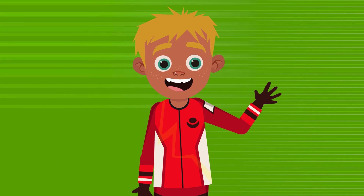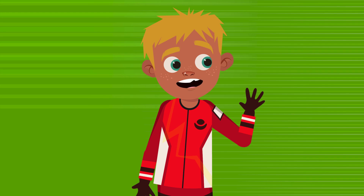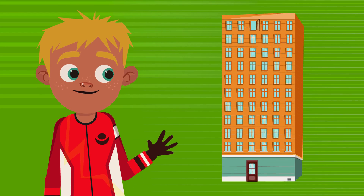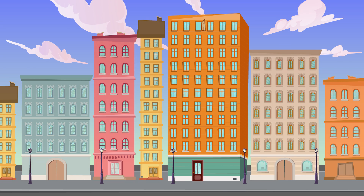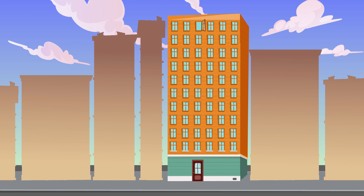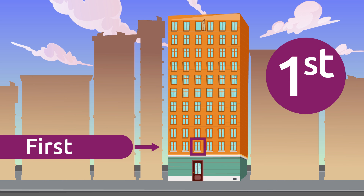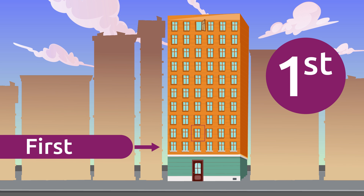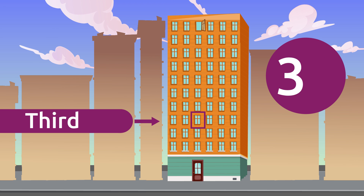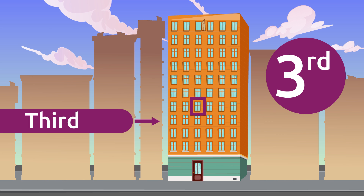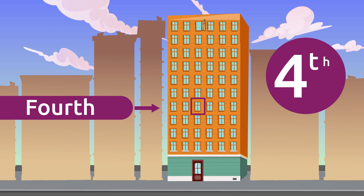But we can also use ordinal numbers to order things, like the floors of a building. I live on the tenth floor of this building. Let's count the windows from the bottom to the top. This window would be the first floor, this window would be the second floor, this window would be the third floor, and this window would be the fourth floor.